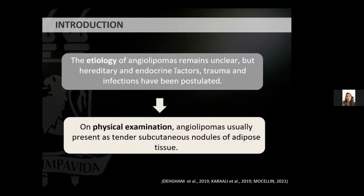The etiology of angiolipomas remains unclear, but hereditary and endocrine factors, traumas, and infections have been postulated. On physical examination, angiolipomas usually present as subcutaneous nodules of adipose tissue.